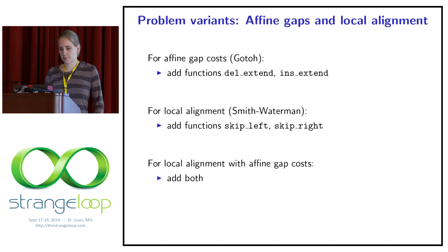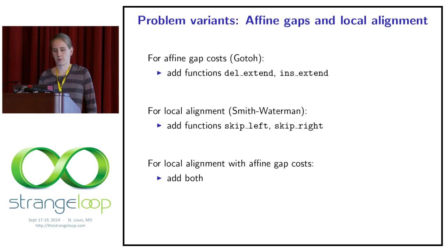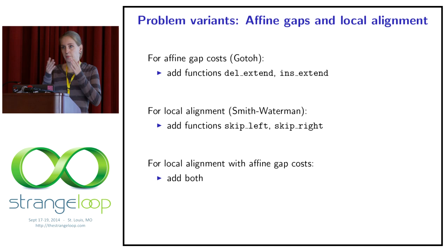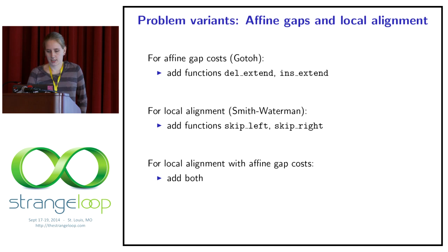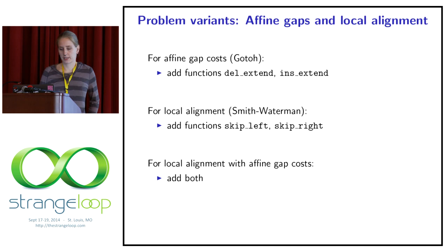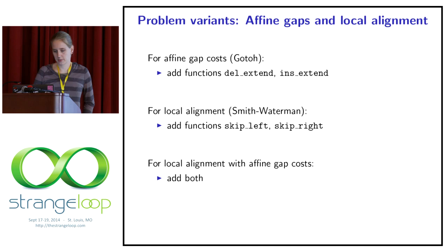What's also great about scoring algebras is they are very versatile — we could easily have variants of the problem. For example, affine gap costs: if we open a gap with insertions and deletions, we want it to be cheaper to extend and more expensive to open, so one big gap is preferred over scattered small gaps. This can be done by just adding two extra functions — delete-extend and insert-extend. Similarly for local alignment, where we can arbitrarily skip something in one of the input strings, we just need skip-left and skip-right functions.